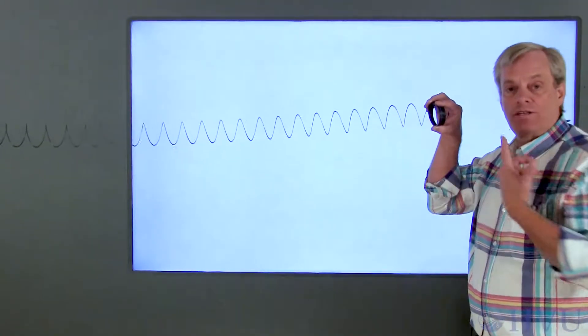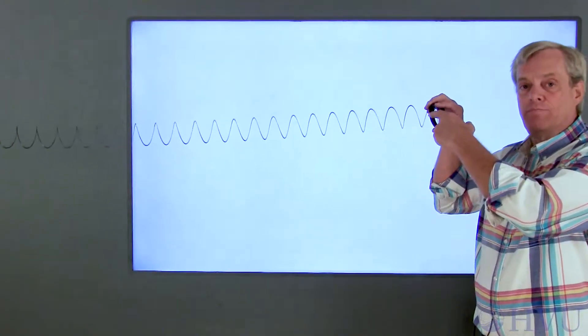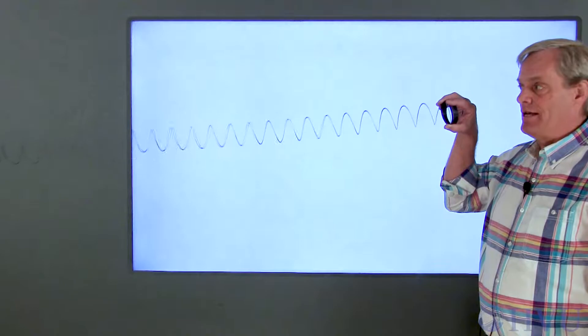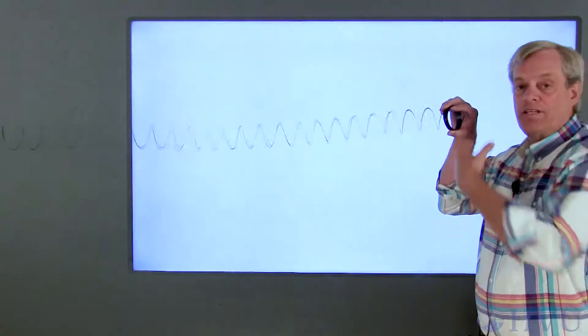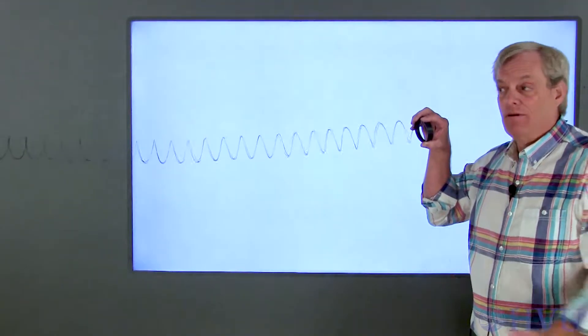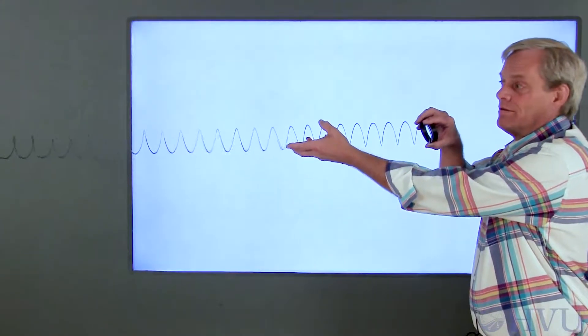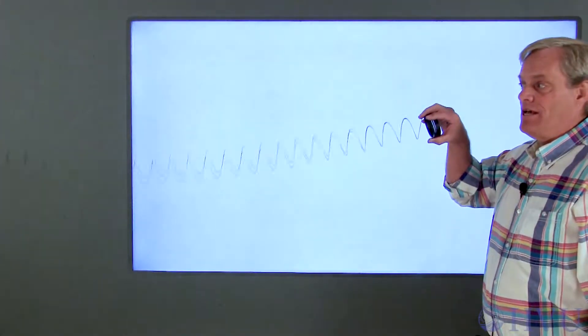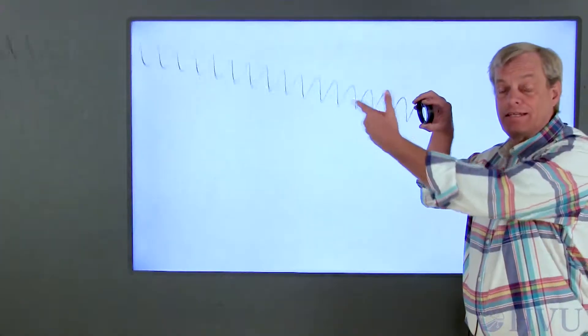Now I've strung the slinky across the room. I can apply an input at this end by plucking the end. I'll get a wave that propagates back and forth across the slinky. An alternate input could be oscillating the end of the slinky up and down, in which case I get this sinusoidal waveform. The slinky behaves differently depending on what our inputs and our outputs are and how we support the slinky. We have to choose a mathematical model that describes each of those cases, which can be very different.